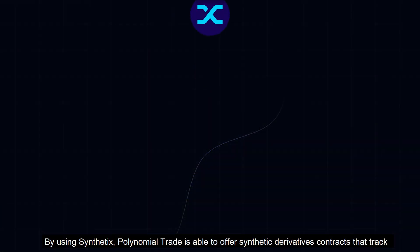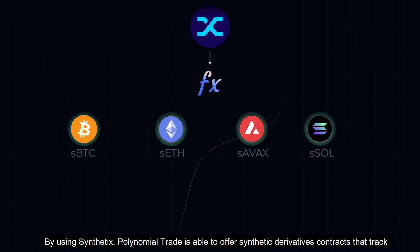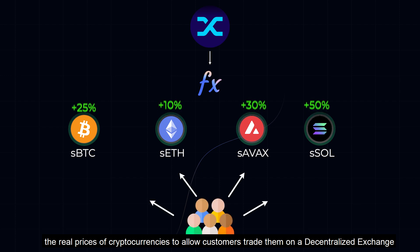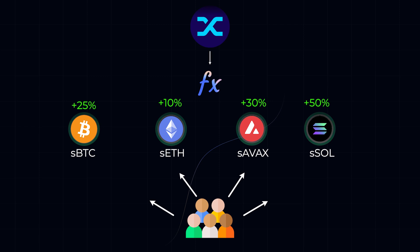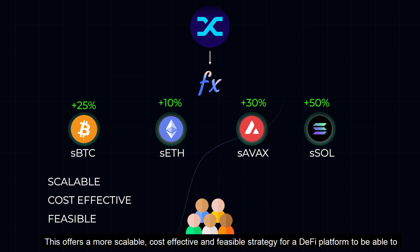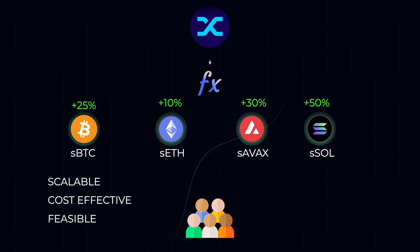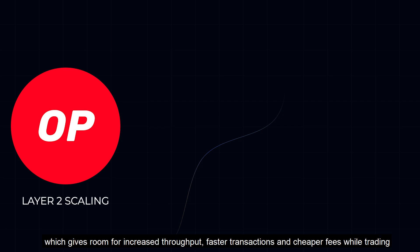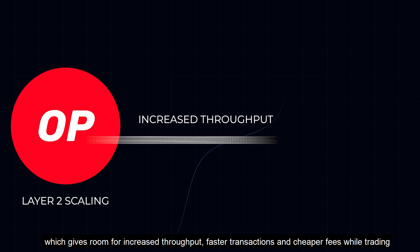By using Synthetix, Polynomial Trade is able to offer synthetic derivatives contracts that track the real prices of cryptocurrencies, allowing customers to trade them on a decentralized exchange. This offers a more scalable, cost-effective and feasible strategy for a DeFi platform to offer perpetual contracts. Being built on Optimism also allows the platform to capitalize on the layer 2 scaling solution, which gives room for increased throughput, faster transactions and cheaper fees.